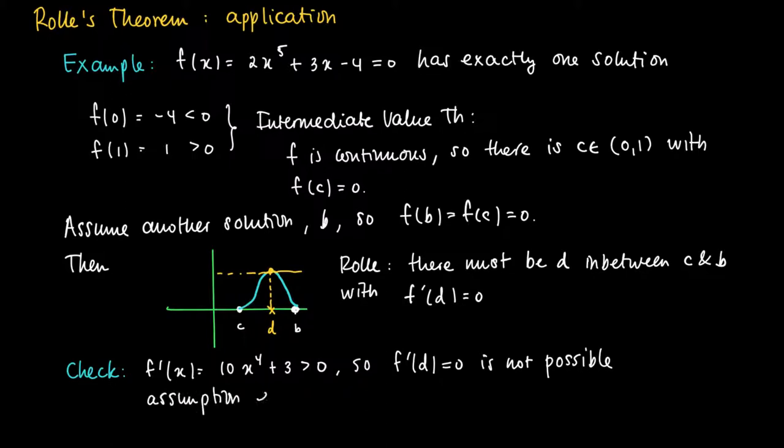So the assumption of an existence of an alternative b and an alternative to c is wrong. So we have only one solution to the equation f(x) equals 0.